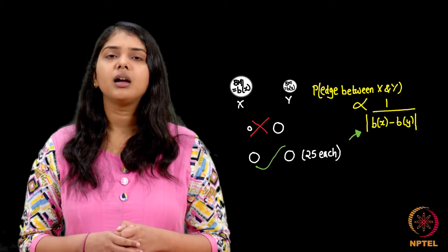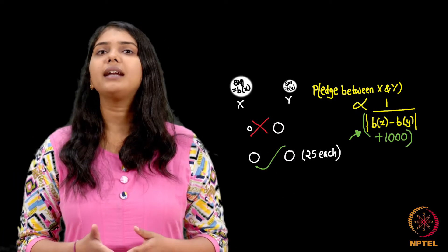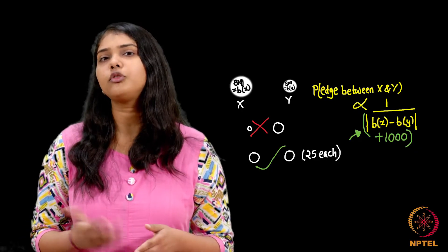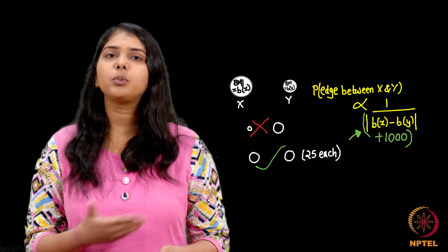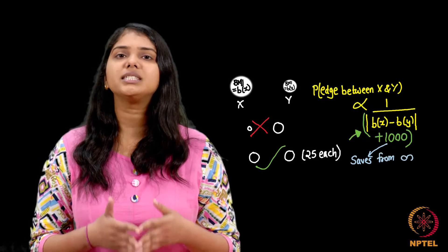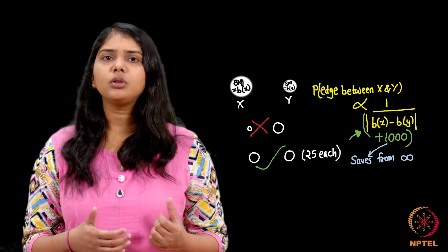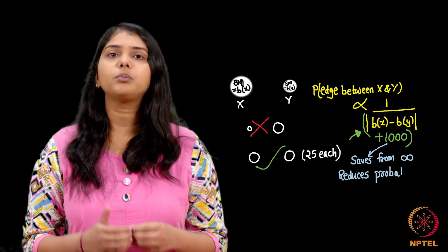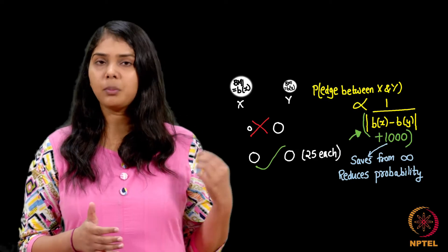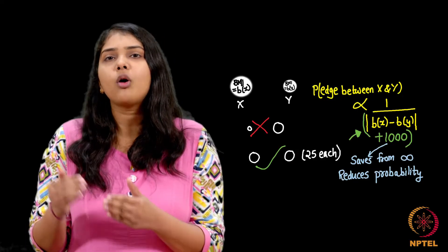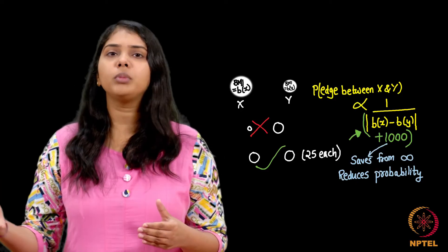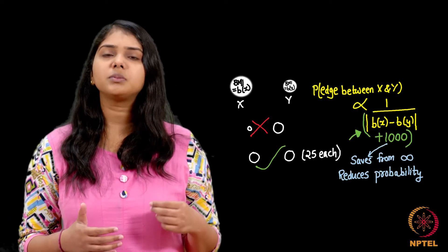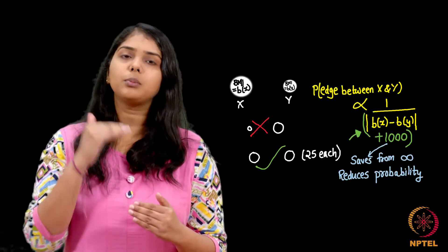We add an extra factor of plus 1000 to the denominator. Without it, if two people have equal BMIs, say 25 each, the probability becomes 1 divided by 0, which is infinity. The plus 1000 resolves this infinity issue and also scales all the probabilities down — because we want to see the network evolving slowly, with edges entering gradually rather than all at once.